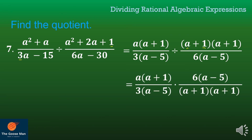I copy my dividend, the division symbol becomes multiplication, and I get the reciprocal of the divisor. Note that I can factor out (a plus 1) and (a plus 1) here, as well as (a minus 5) and (a minus 5). Also, 6 and 3 are divisible by 3: 3 divided by 3 is 1, and 6 divided by 3 is 2. Multiplying the remaining factors: 2 times a all over 1 times (a plus 1), giving the final answer 2a all over a plus 1.